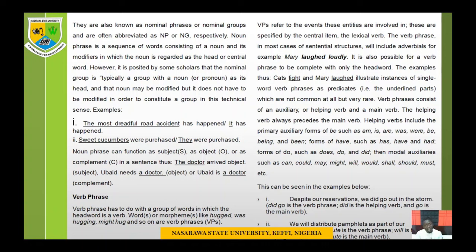A noun phrase can function as the subject of a sentence, as the object, or as a complement. For instance, 'the doctor' in 'the doctor arrived' is the subject. In 'Obaid needs a doctor,' 'a doctor' is the object. In 'Obaid is a doctor,' 'a doctor' is the subject complement, because it tells you who Obaid is — not that it is receiving the action. This is how we differentiate between object and subject complement.